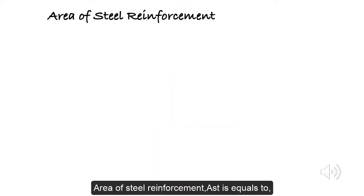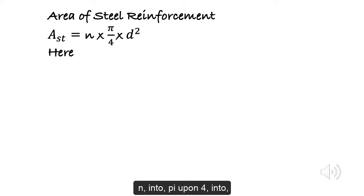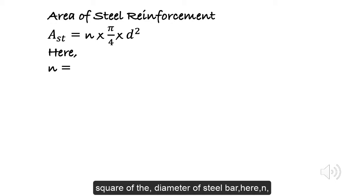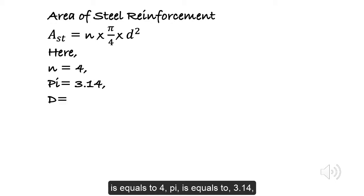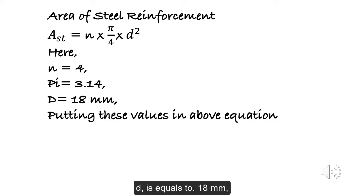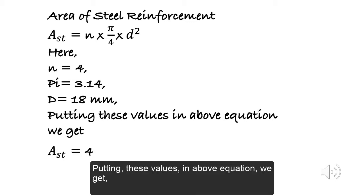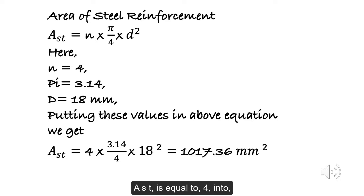Area of steel reinforcement AST is equals to N into pi upon 4 into square of the diameter of steel bar. Here, N is equals to 4, pi is equals to 3.14, D is equals to 18 millimeters. Putting these values in above equation we get AST is equal to 4 into 3.14 upon 4 into 18 square, is equal to 1017.36 millimeter square.